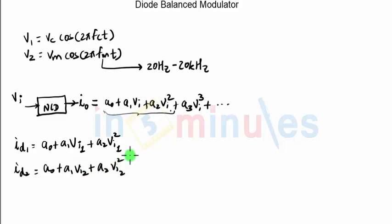So here I have taken the two diode currents as ID1, ID2 and the corresponding inputs to the diodes are VI1 and VI2. If you notice I'm using the same coefficients A0, A1 and A2 for both the diodes which is possible if the two diodes are perfectly matched or identical to each other.